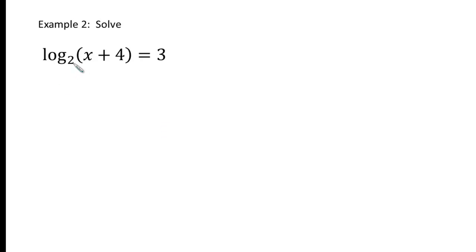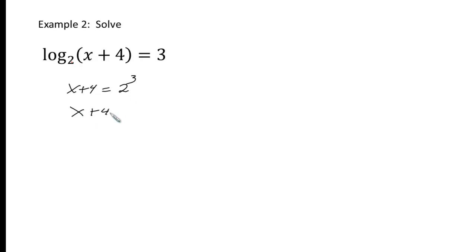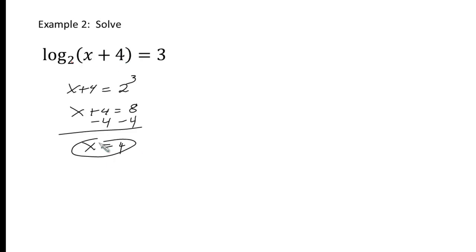This example does not have the same logs on both sides — we only have a log on one side. So we're going to rewrite the log in exponential notation. We get x plus 4 equals 2 cubed. Since 2 cubed is 8, and it's a linear equation, we use regular algebra skills and get x equals 4. Don't forget to plug 4 back in: 4 plus 4 is 8, which is a positive number, so it's not extraneous.